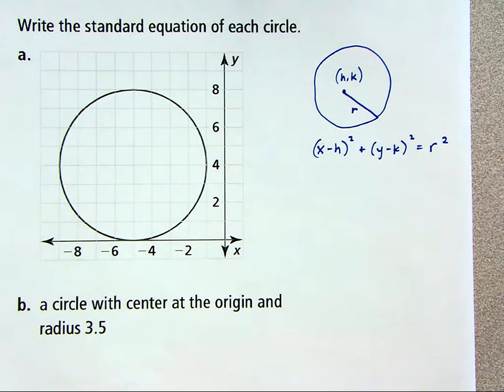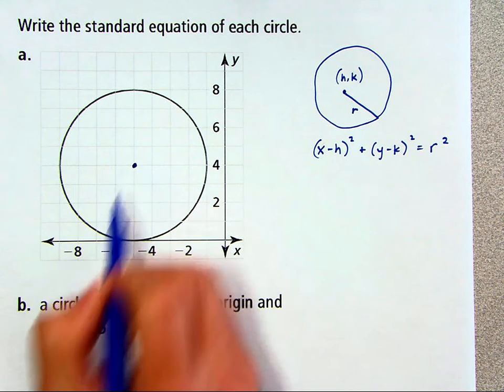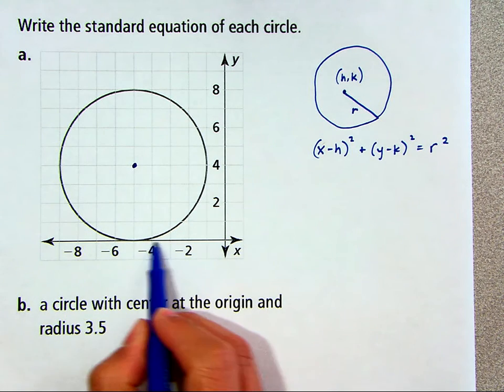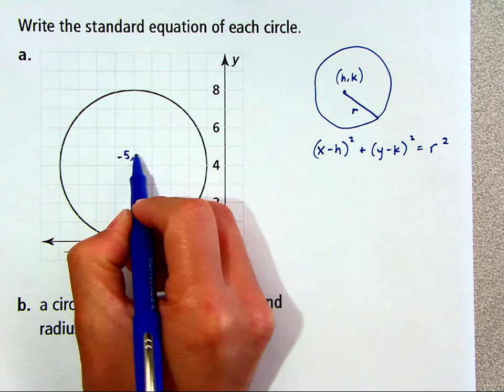All right. So in part A, we have a circle drawn in the coordinate plane. We can locate the center right here. And so the x coordinate, it looks like it's negative 5. The y coordinate is 4.